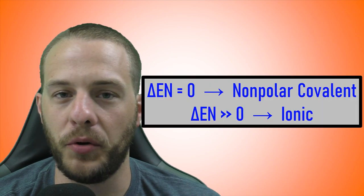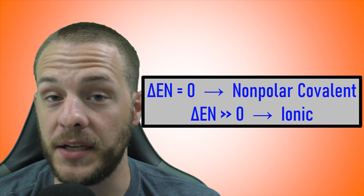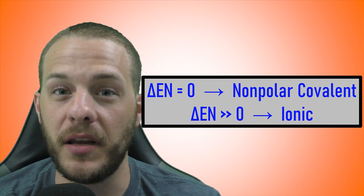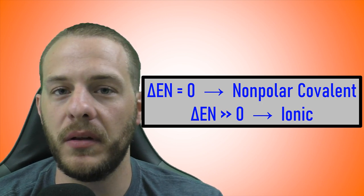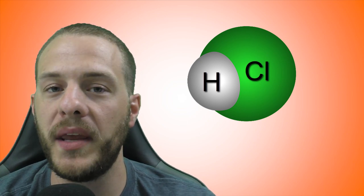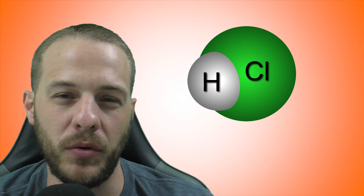So far we've seen that we get a nonpolar covalent bond when there's no difference in electronegativity between the two atoms, and that we get an ionic bond when there's a large difference in electronegativity between the two atoms. But there's also a third possibility. Let's take a look at a hydrogen chloride molecule. In this case, there is a significant difference in electronegativity between these two elements, but that difference isn't quite large enough to result in a complete transfer of electrons from one atom to another. Instead, what we end up with is a bond in which the electrons are being shared between the two atoms, however it's an unequal sharing of electrons.